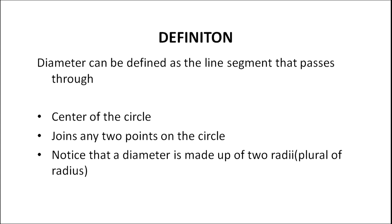Now we will define what a diameter is. Diameter can be defined as a line segment that passes through the center of the circle, joins any two points on the circle, and is made up of two radii. The term radii is used because radii is the plural of the term radius.